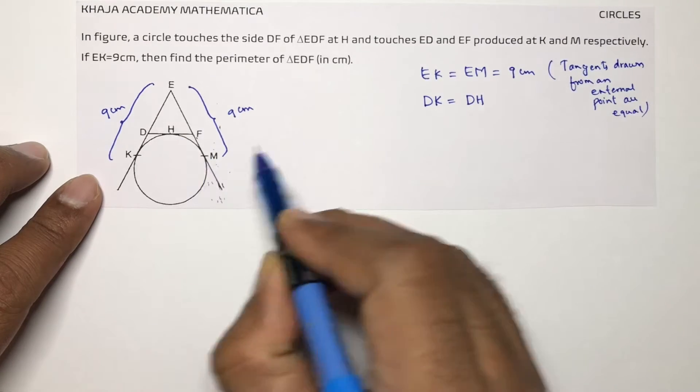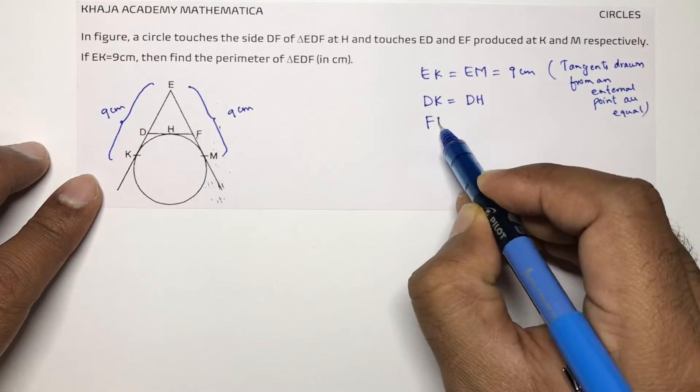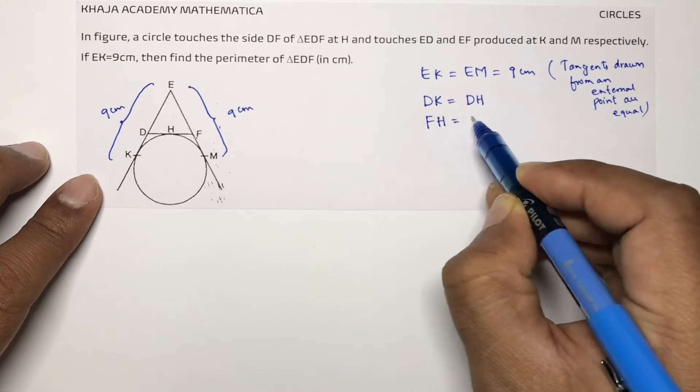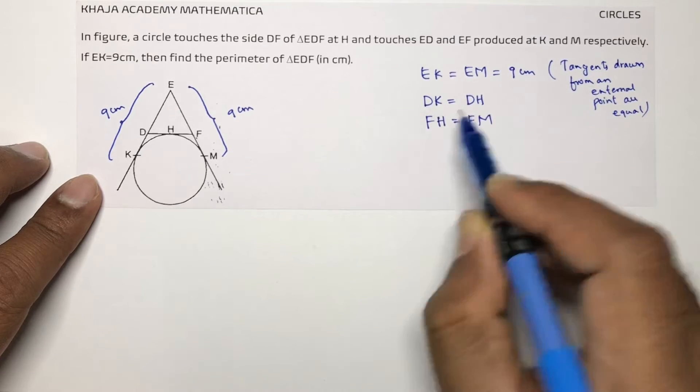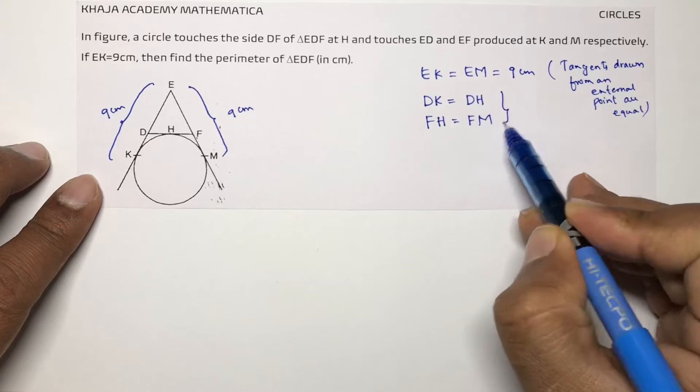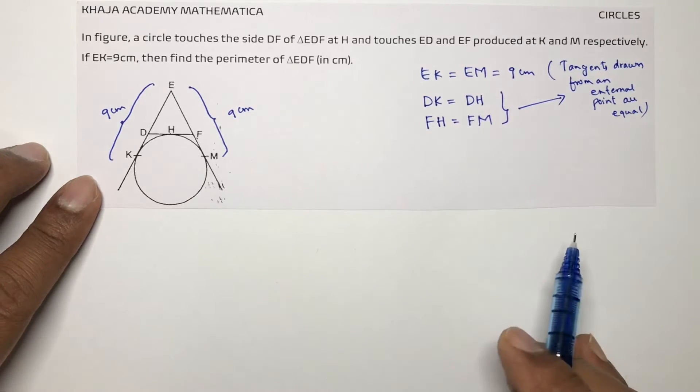FH equals FM. FH equals FM. The reason is the same: tangents drawn from an external point are equal.